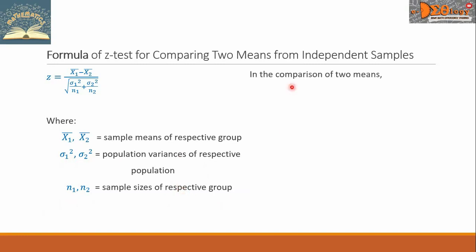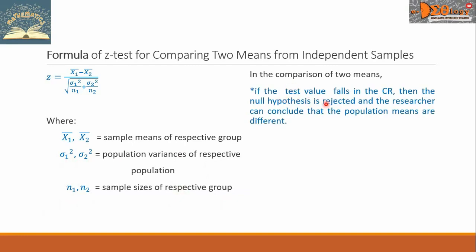In the comparison of two means, if the test value falls in the critical region, then the null hypothesis is rejected, and the researcher can conclude that the population means are different.